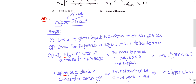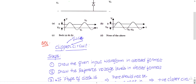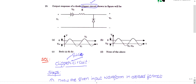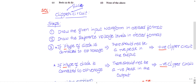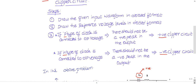Now let us see what we need to do in order to analyze a clipper circuit. First, he will give a circuit, he will give an input, and he'll ask for an output. A circuit will be given to you, an input waveform will be given to you, and he'll ask for an output waveform. Here you may think the input is not given — let us keep that point aside.